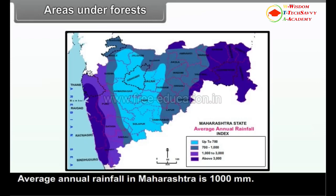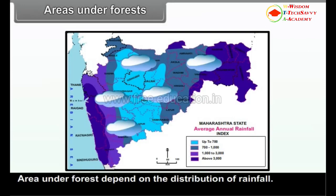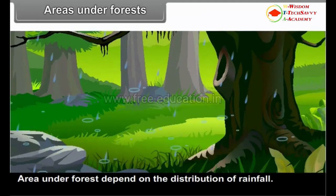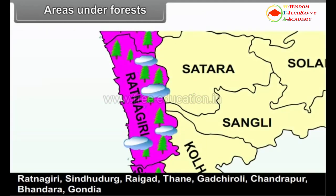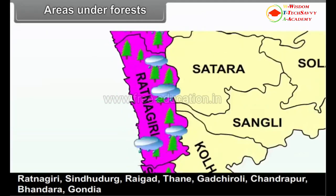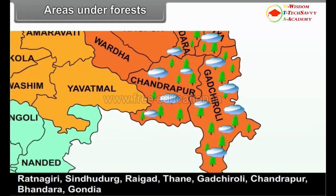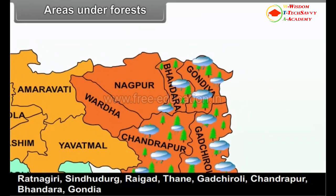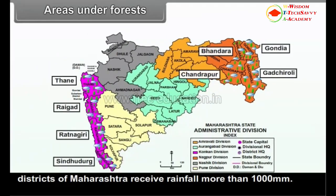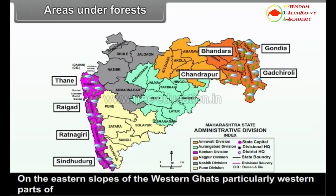Areas Under Forests. Average annual rainfall in Maharashtra is 1000 mm. Area under forests depends on the distribution of rainfall. Ratnagiri, Sindhudurg, Raigarh, Thane, Gadchiroli, Chandrapur, Bhandara, and Gondia districts of Maharashtra receive rainfall more than 1000 mm. On the eastern slopes of the Western Ghats, particularly western parts of Nasik, Pune, Satara, Sangli, and Kolhapur districts have significant areas under forests.